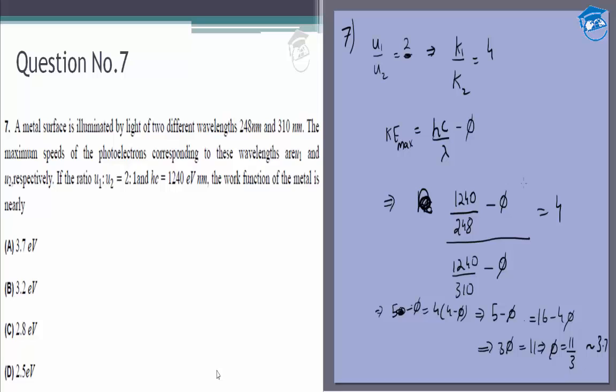So the answer to this question is 3.7 electron volts or option A. Thank you.